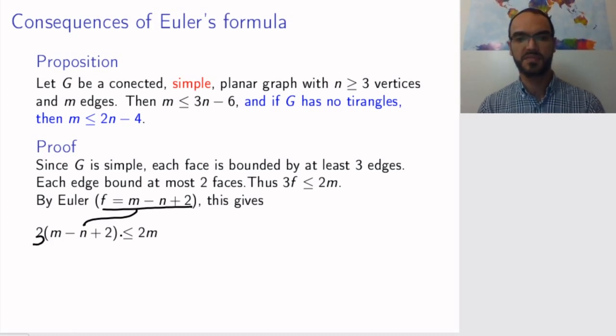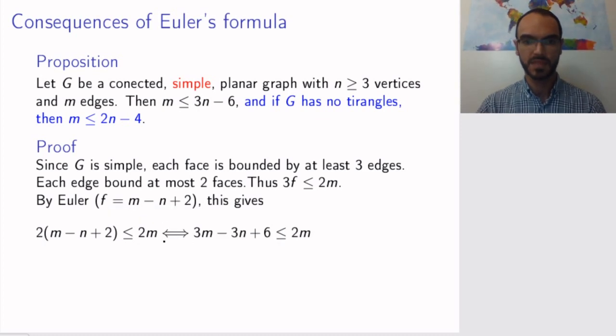So 3 times this parenthesis, the number of faces, is at most 2m. But if we simplify, this means that 3m minus 3n plus 6 is at most 2m. Or if we move terms around, it means that m is at most 3n minus 6. So this proves the first statement that the graph can have at most this many edges.